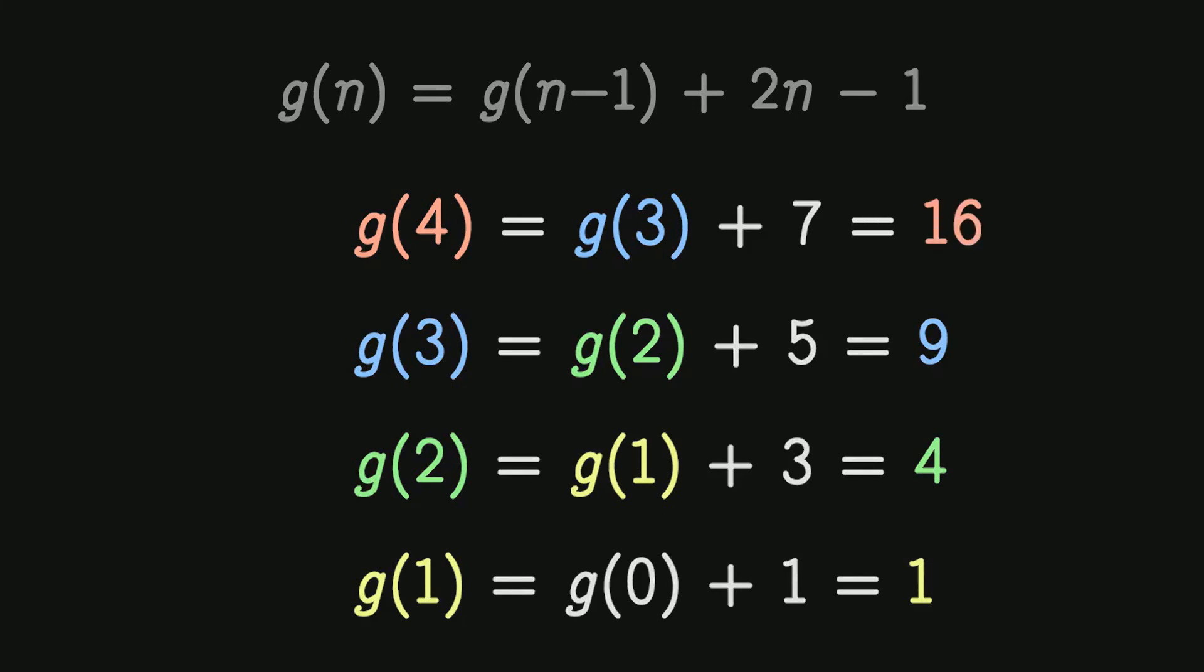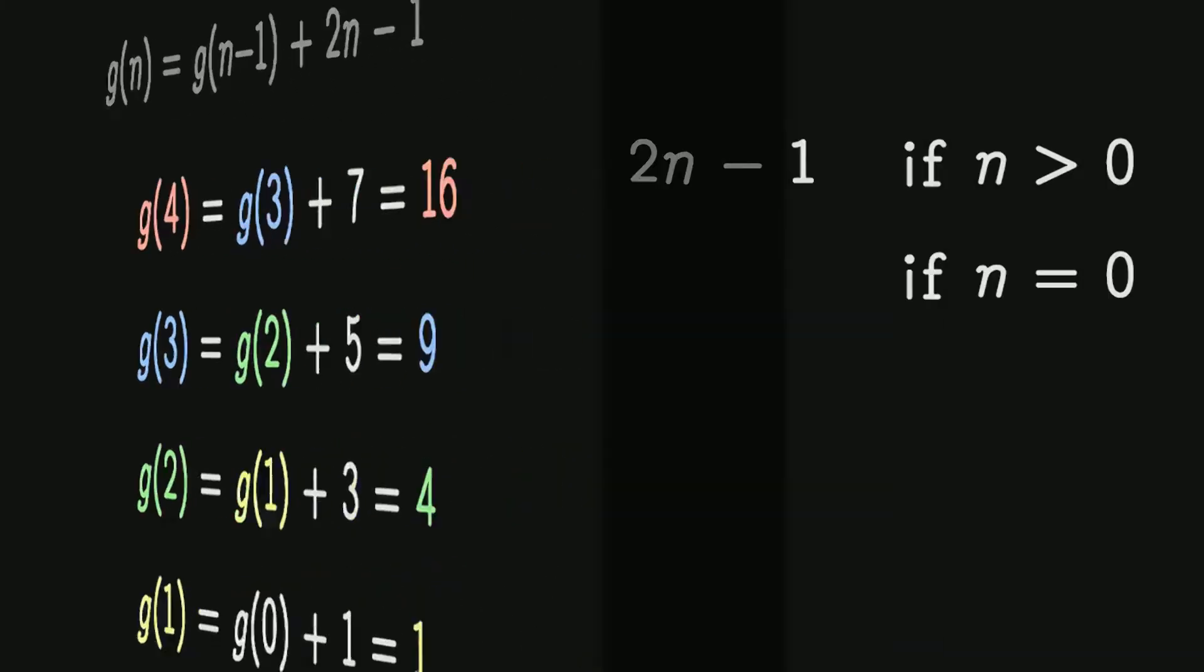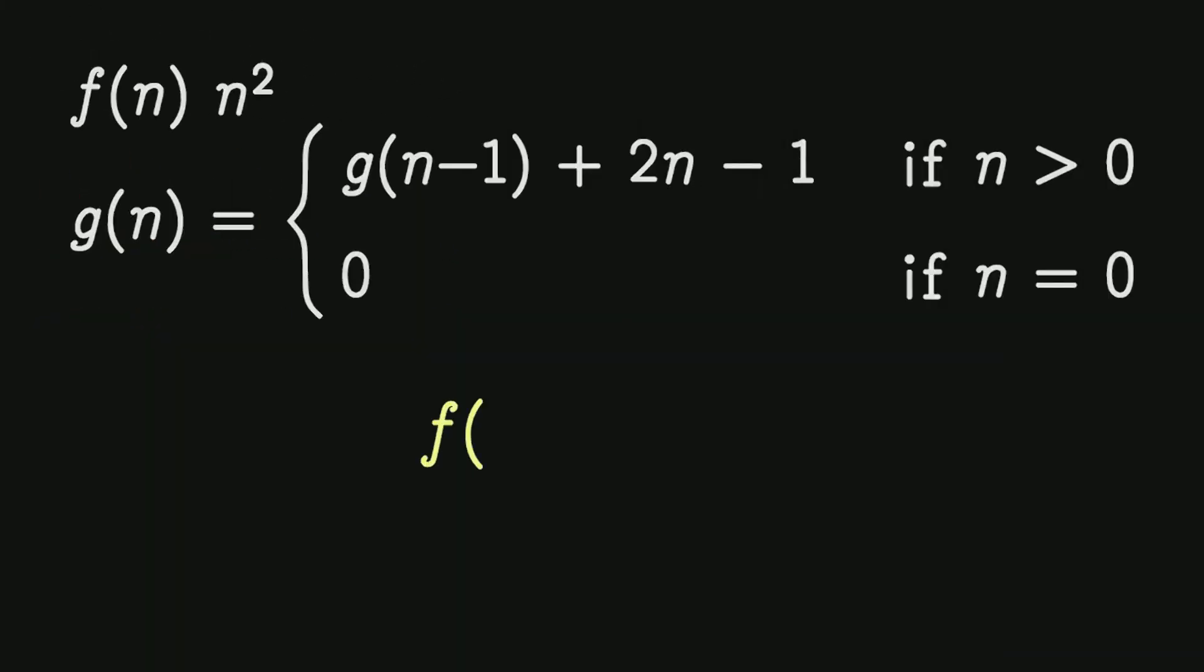And here is where things start to make sense, because a recursive function always has to define a base case. There always has to be an assumption. And now we can say that f of n is equal to g of n. Thank you for watching.